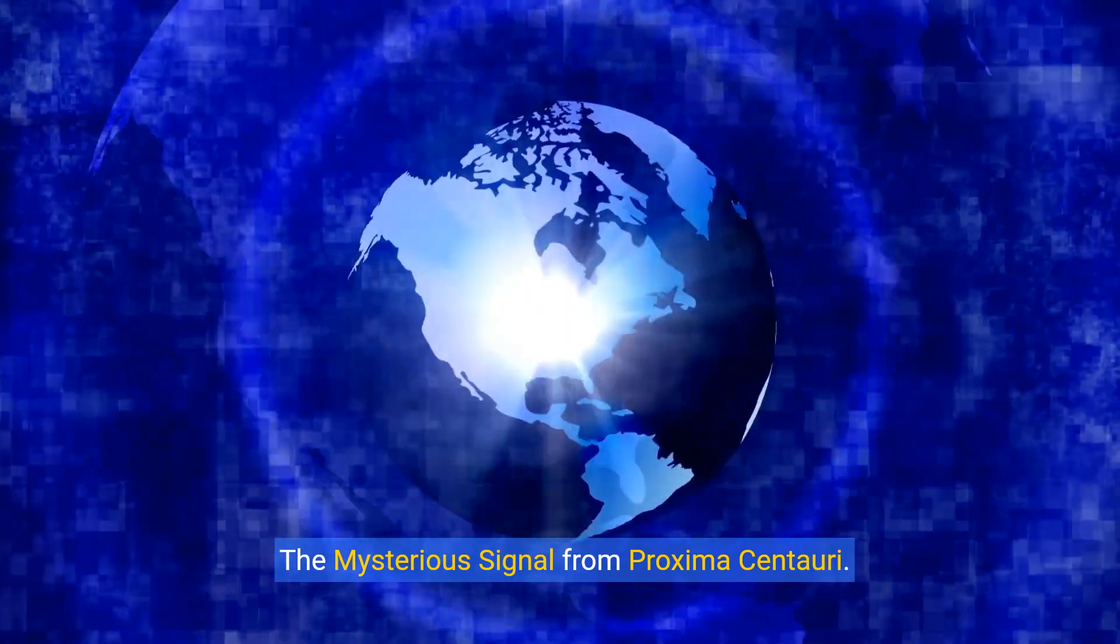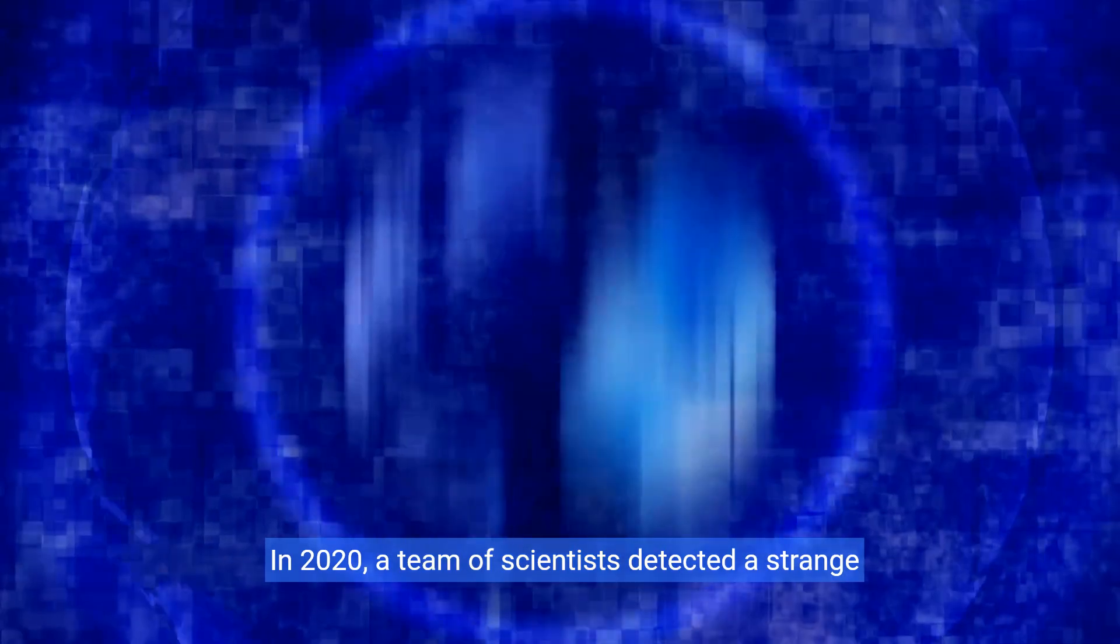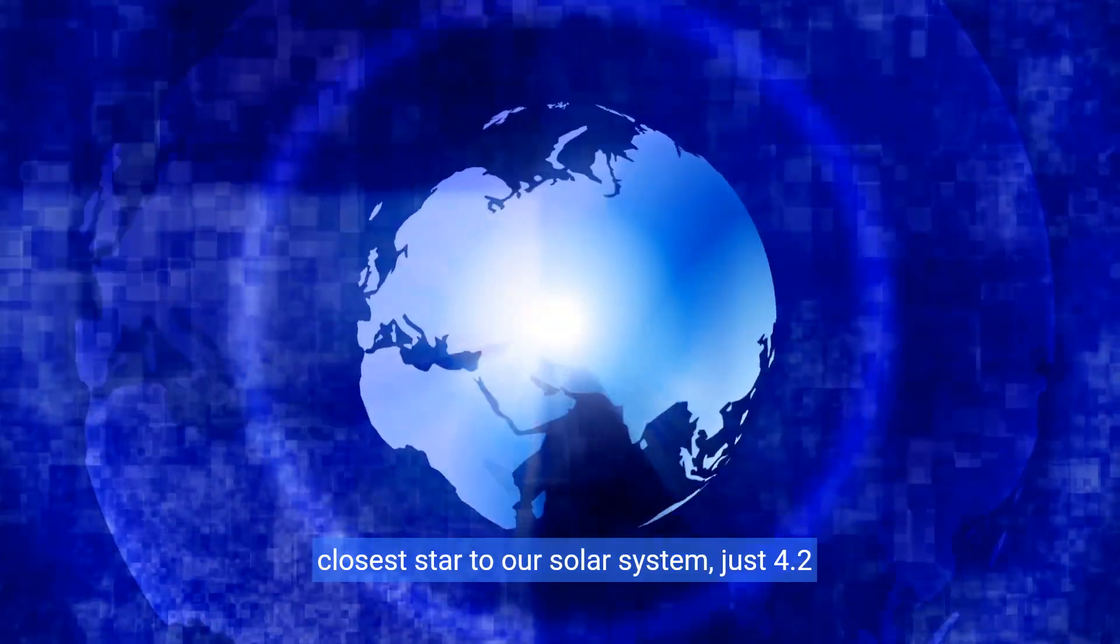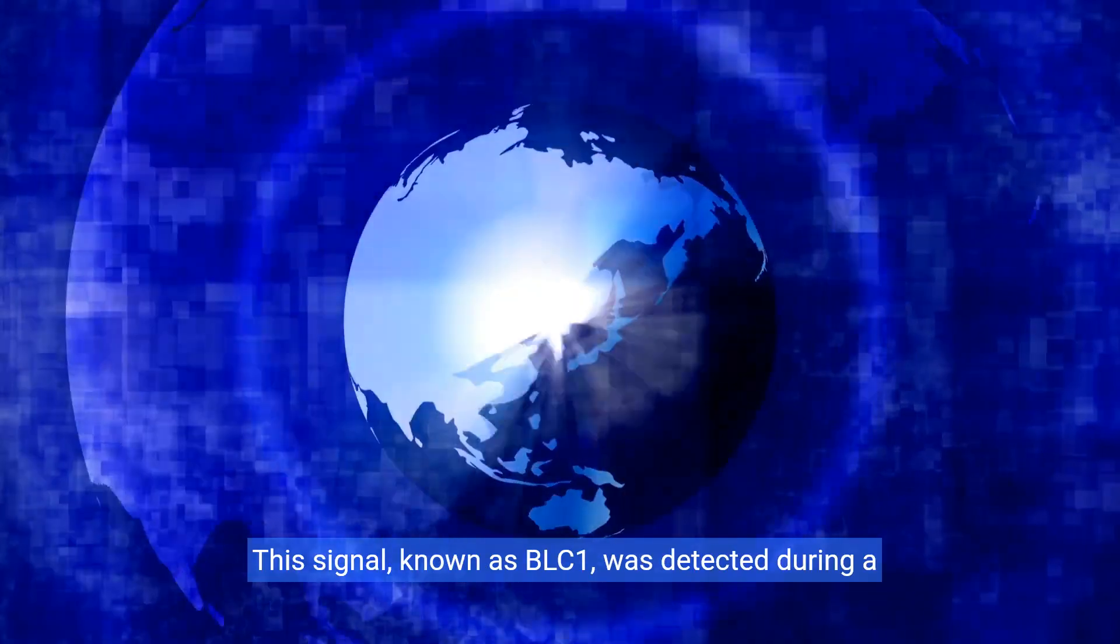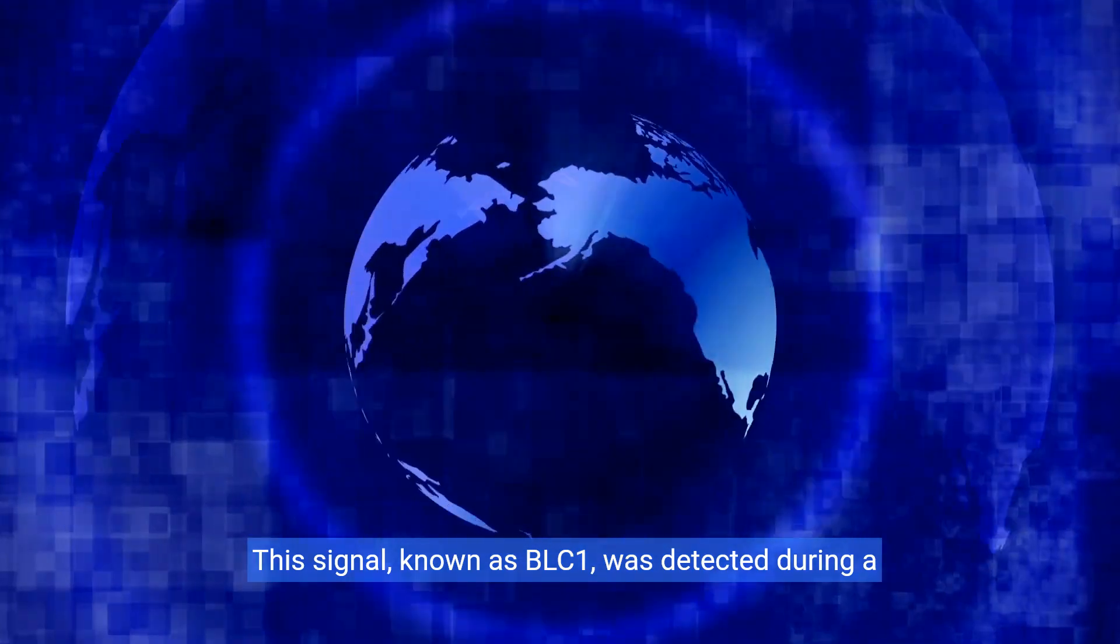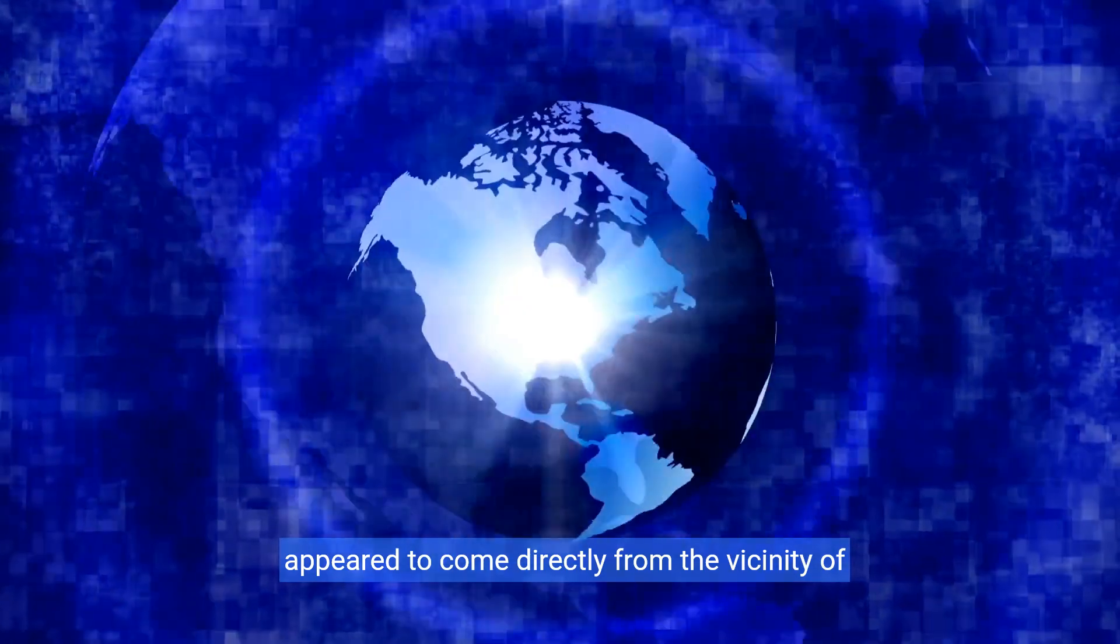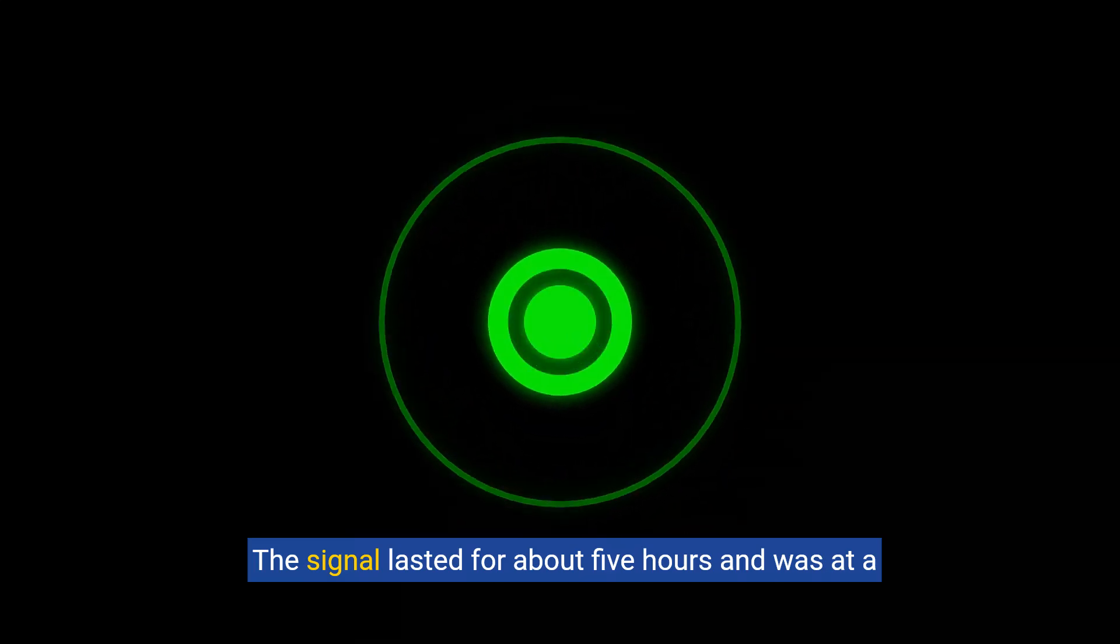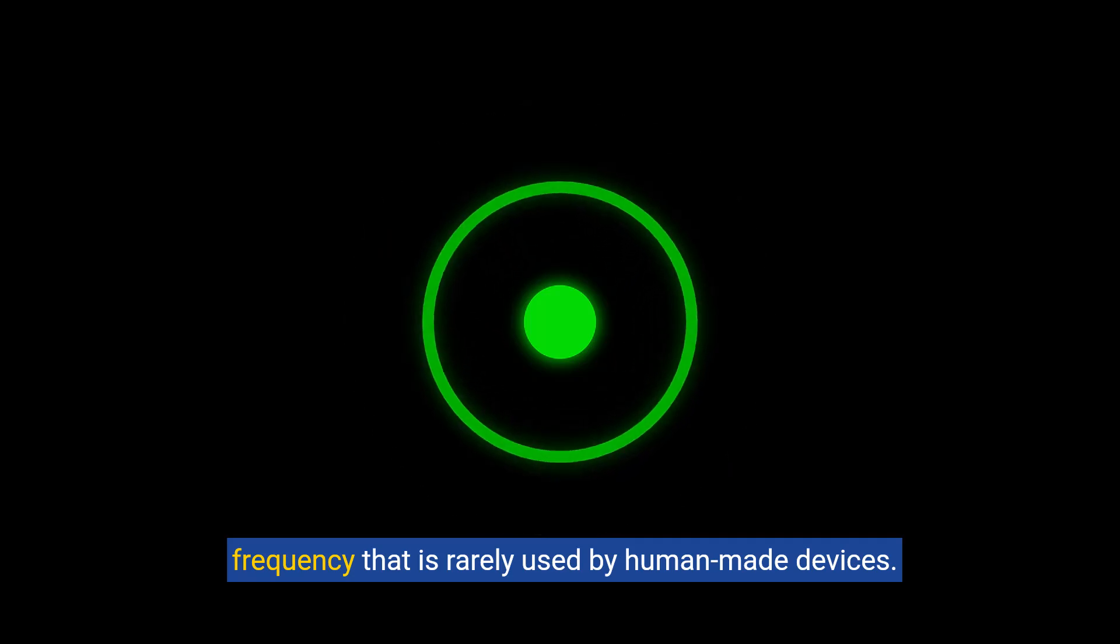The mysterious signal from Proxima Centauri. In 2020, a team of scientists detected a strange radio signal coming from Proxima Centauri, the closest star to our solar system, just 4.2 light-years away. This signal, known as BLC1, was detected during a survey for extraterrestrial intelligence and appeared to come directly from the vicinity of Proxima Centauri. The signal lasted for about five hours and was at a frequency that is rarely used by human-made devices.